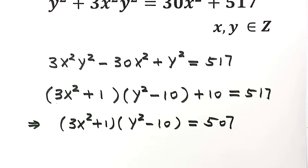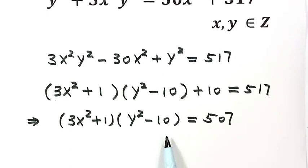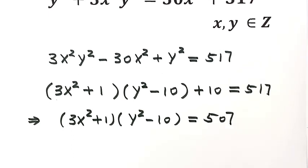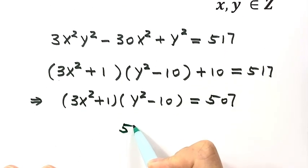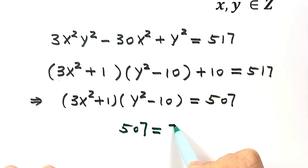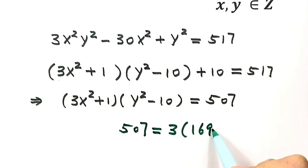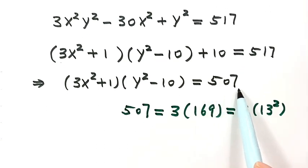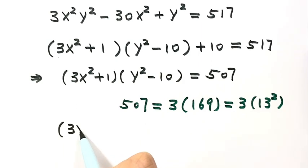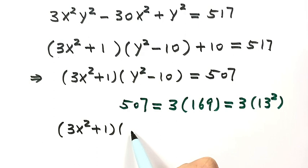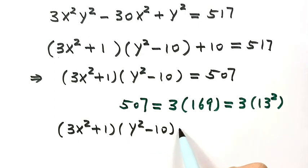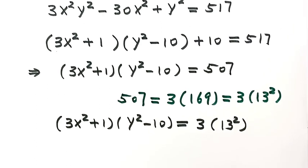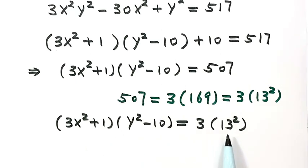The left hand side is a product of two factors. Next we're going to prime factor the right hand side number 507. So 507 equals 3 times 169, and 169 is 13 squared. So we replace 507 with 3 times 13 squared, giving us: 3x squared plus 1 times y squared minus 10 equals 3 times 13 squared.